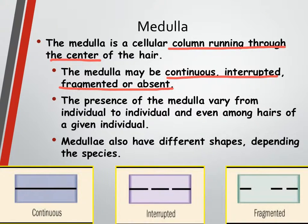The last layer we need to talk about is the medulla. The medulla is found in the very center of the hair and is made up of a group of cells — we describe it as a cellular column that runs through the center. It can have four different arrangements: it can be continuous, meaning one long line always joined together; interrupted, where the pieces are broken into the same size over and over; fragmented, meaning it's still broken up but the pieces are no longer the same size; or absent, meaning there is no medulla at all.